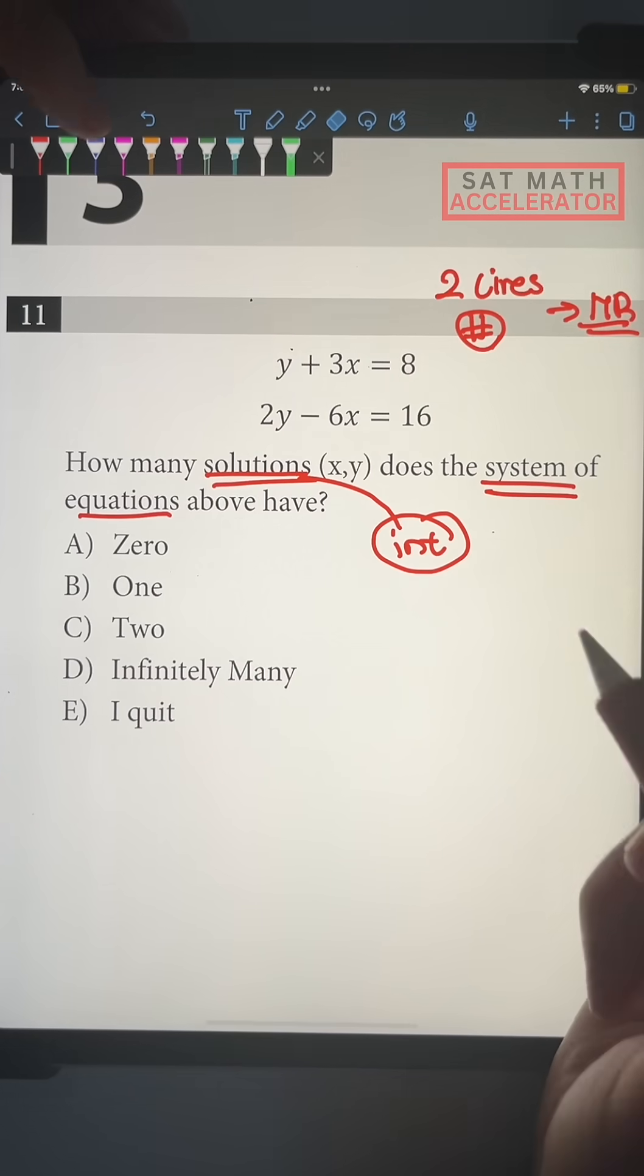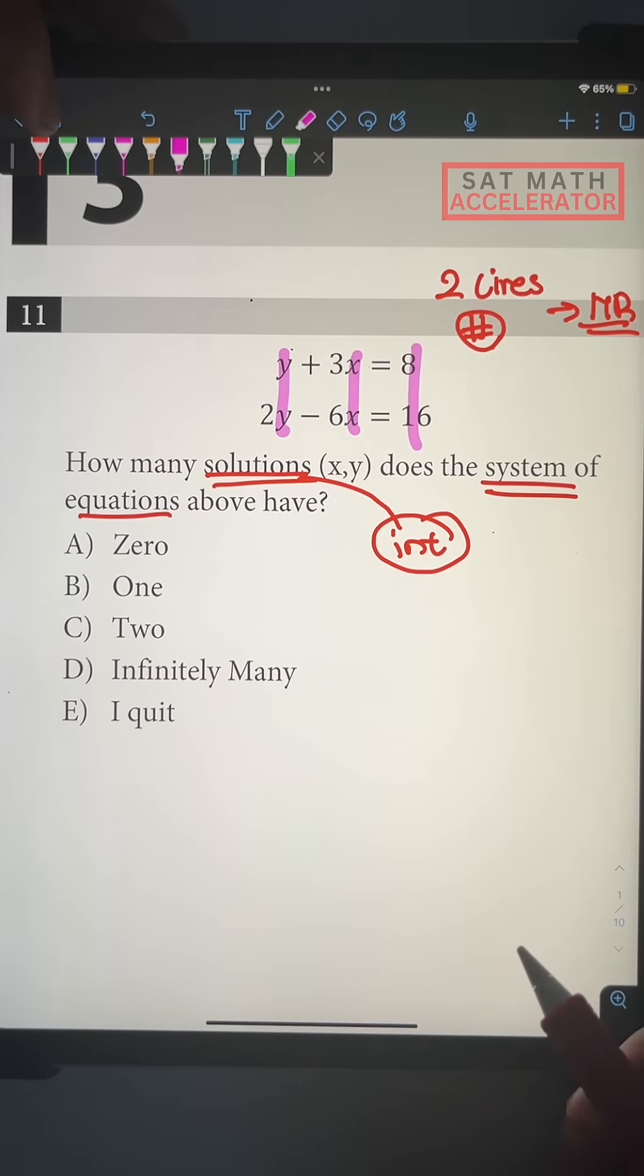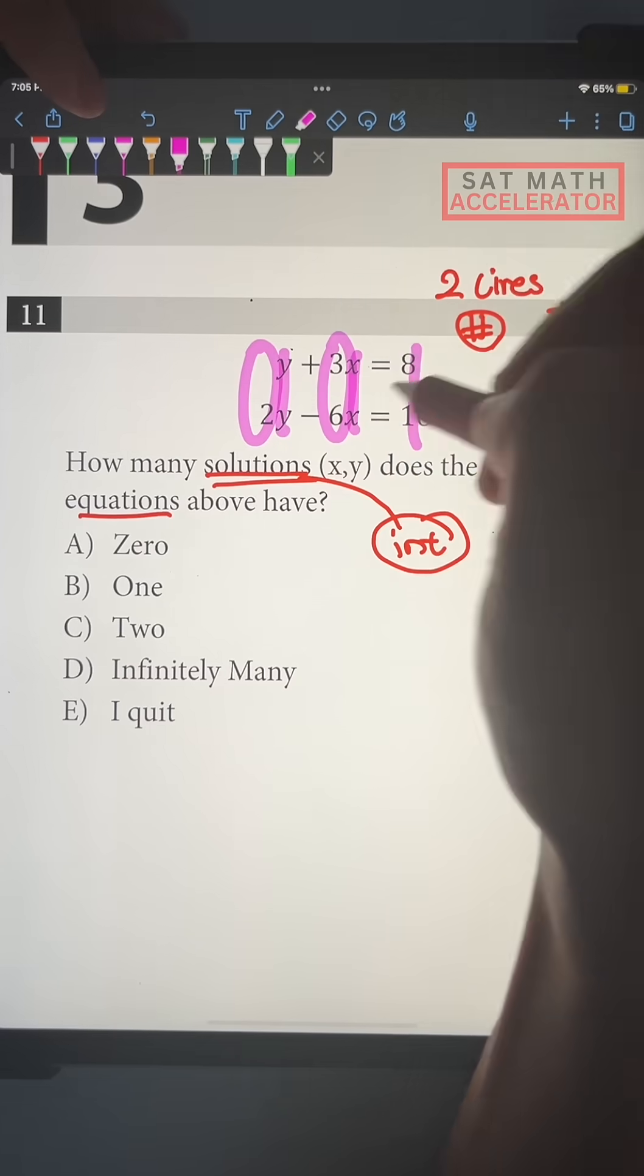And how the matching rule works is quite simple. All you have to do is just line up the y's, x, and the numbers, and just compare the numbers attached in front of each of these variables.